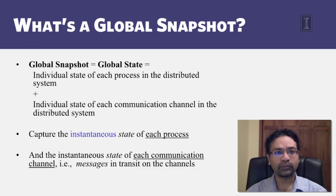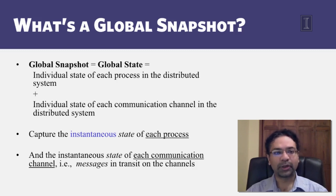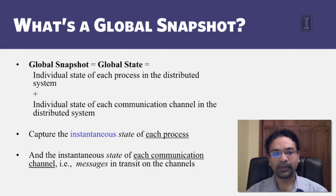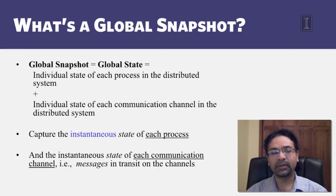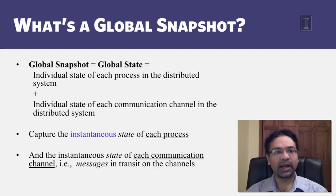But what is a global snapshot? A global snapshot, or global state, consists of an individual state for each process in the distributed system along with the state for each of the communication channels in the distributed system. Essentially we want to capture the instantaneous state of each process in the system and also the instantaneous state of each of the channels. When I say a channel, I mean a point-to-point channel that goes from one process PI to another process PJ.